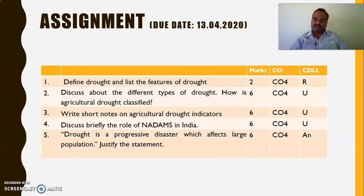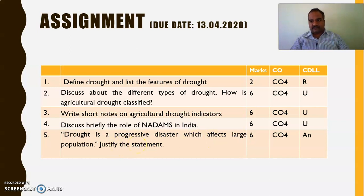Coming to the assignment: the due date will be extended and you are supposed to complete the assignment before the first week of May. Answer the questions briefly — do not answer in detailed fashion. One question is to justify the statement that drought is a progressive disaster which affects a large population — justify it using what we have studied about the environmental, social, and economic impacts of drought on the country.